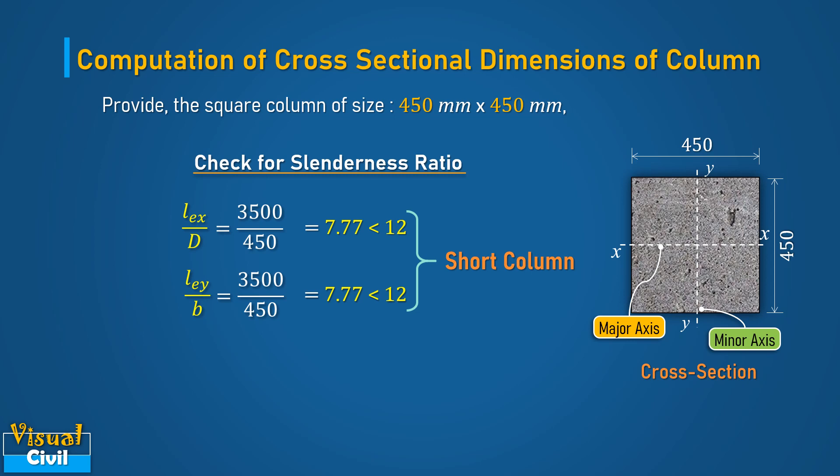Hence, the assumption of short column is satisfied. In case this check fails, then increase the column dimension and recheck the slenderness ratio.